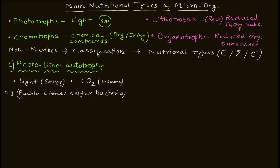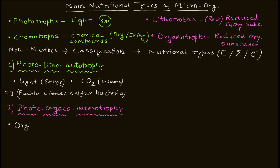Now let's move on to the second category, which is photo organo heterotrophy. Photo organo heterotrophy means you are using organic compounds as well as carbon dioxide. The example for this category includes green and purple non-sulfur bacteria.